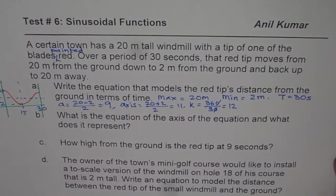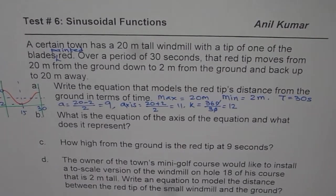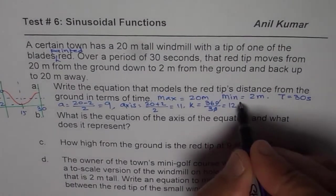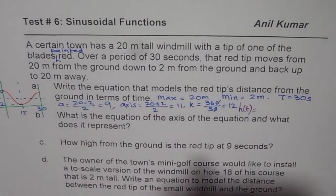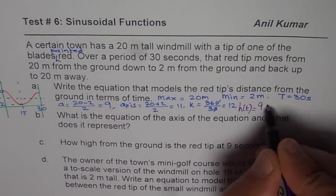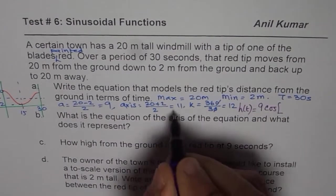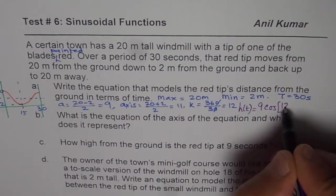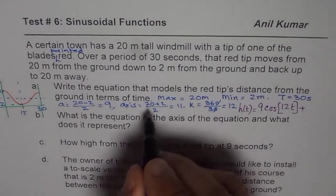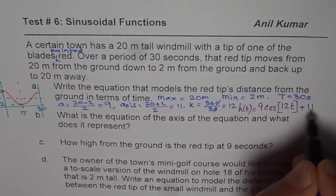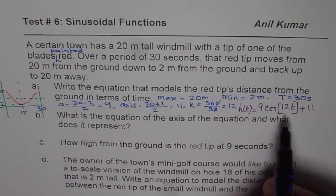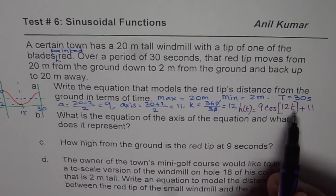Now, with all this, we can actually write down a cosine function. Since it starts with maximum, that is better to write. So we say height with respect to time for the blade, red tip blade of the windmill, can be written as the amplitude 9 times cos of K value, which is 12, and T, because there is no phase shift, starts with the maximum, plus axis, which is 11. So that becomes the equation for the given function, where height is in meters and T is in seconds. So that is how it is.